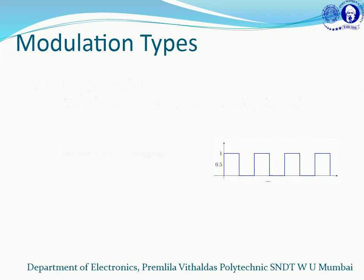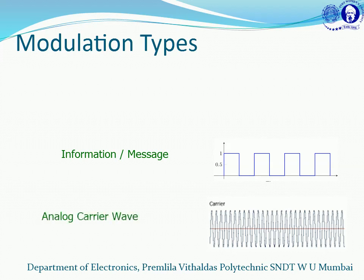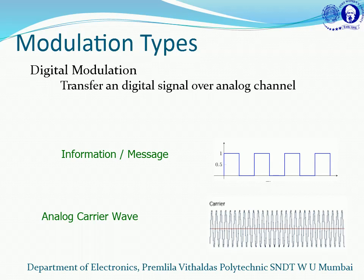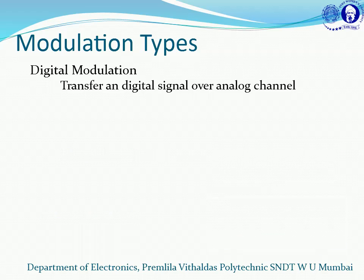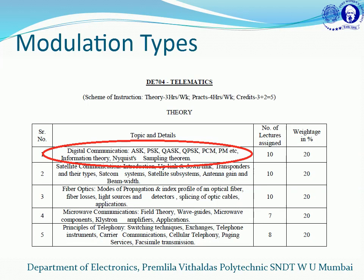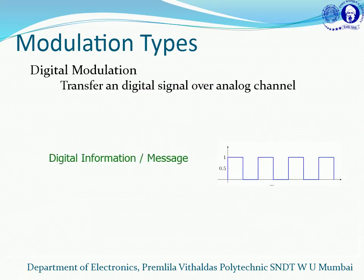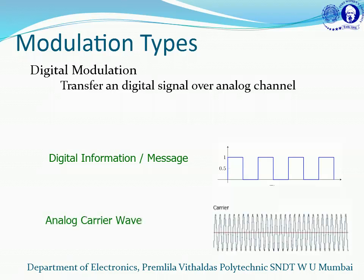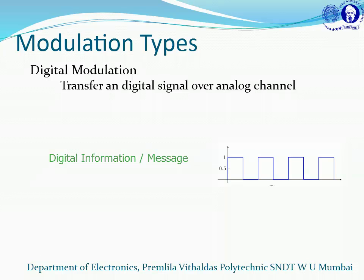What if we have digital information and an analog carrier? That comes under digital modulation, which is our current syllabus content. Here we are supposed to learn about digital modulation, where we talk about digital information transmitted over an analog carrier — digital information over an analog channel. This is the principle of digital modulation.